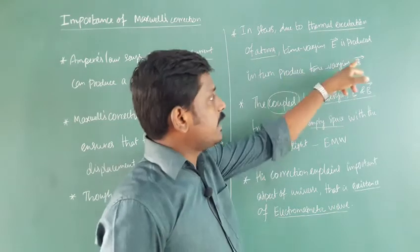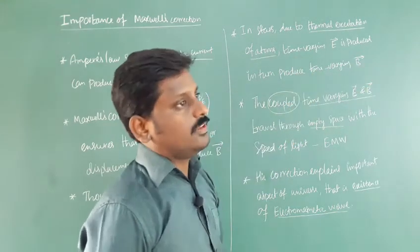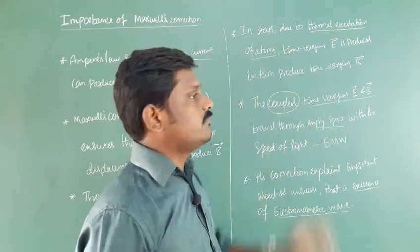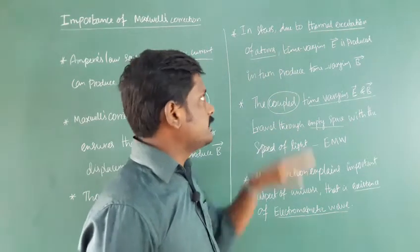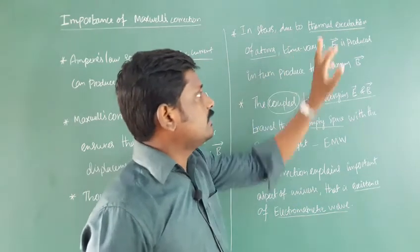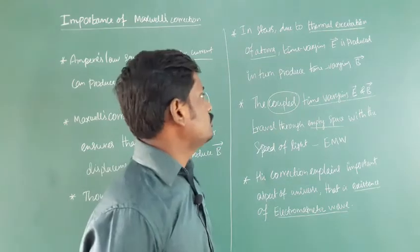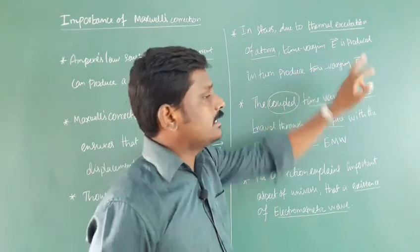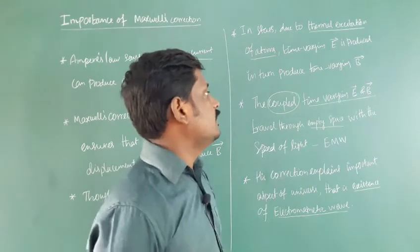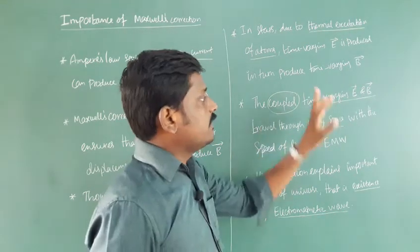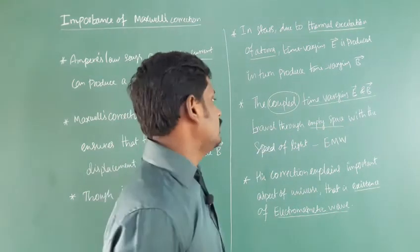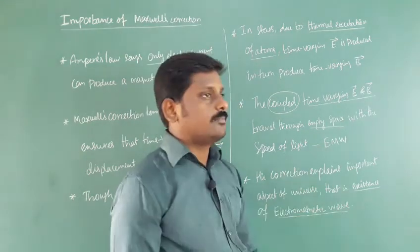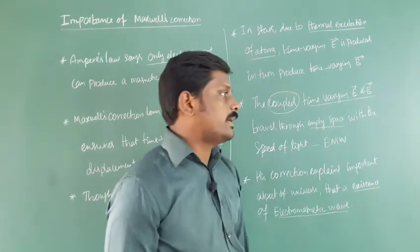According to Faraday's law of electromagnetic induction, a change in magnetic field produces a change in electric field, and so on. In stars, due to the thermal excitation of atoms, the time-varying electric field produces a time-varying magnetic field. These coupled time-varying electric and magnetic fields travel through empty space with the speed of light — that is called an electromagnetic wave.